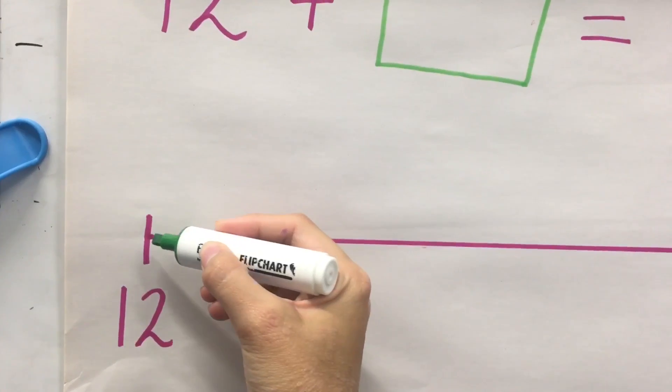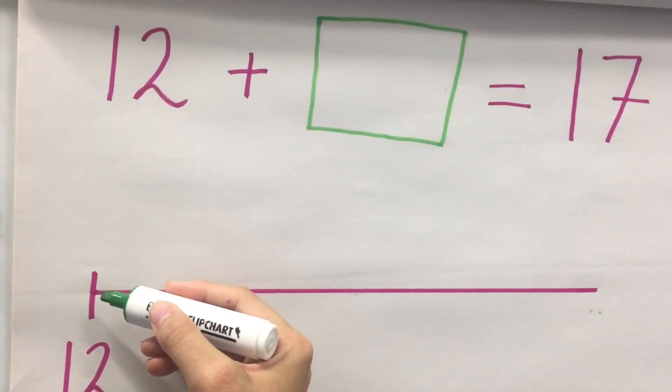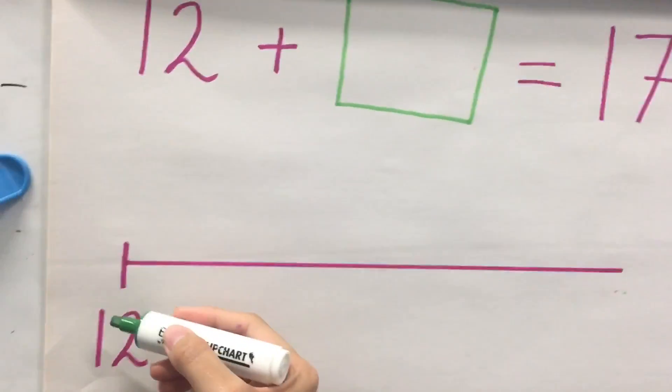Starting from 12, you're going to jump. Remember that you need to count on from 12. You're not going to count 1, 2, 3. You're going to count on from 12.